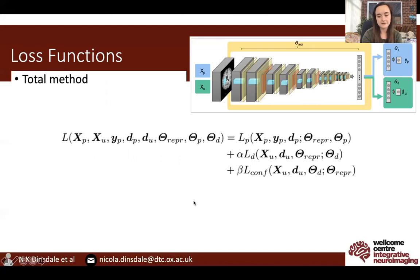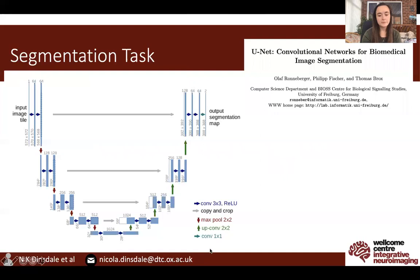The total loss function updated by the network uses alpha and beta as weights for the different loss functions involved with unlearning the scanner information. We can see that we do not require main task labels for unlearning domain information, meaning we can use different data to update the different loss functions. When considering the segmentation task, the obvious network to choose is the U-Net, the go-to network for medical image segmentation.